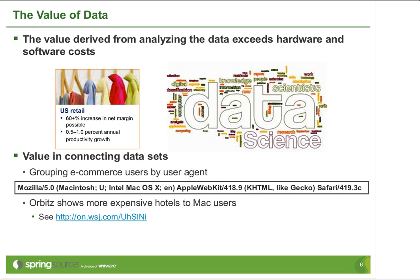The reason there's a resurgence of interest in collecting information that otherwise used to go unanalyzed is that the value companies can derive from analyzing this data is now considerably greater than the cost of setting up the hardware and software to collect and analyze it. One example is Orbitz: they analyzed the user agent header in requests made to their travel website and determined that Mac owners would be more amenable to buying hotels or airfare priced higher than non-Mac users. These scenarios, where a data scientist finds ways to make a company more profitable, are why there's so much interest in this space.